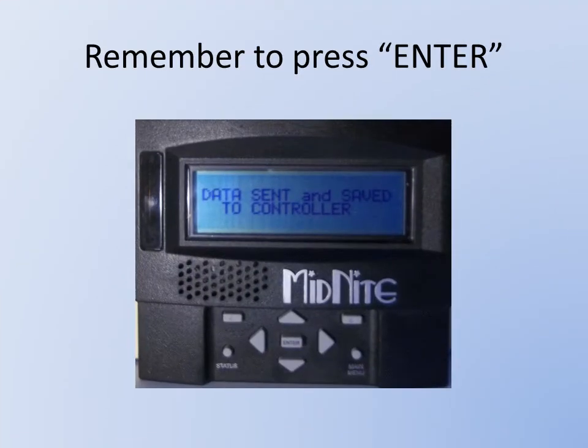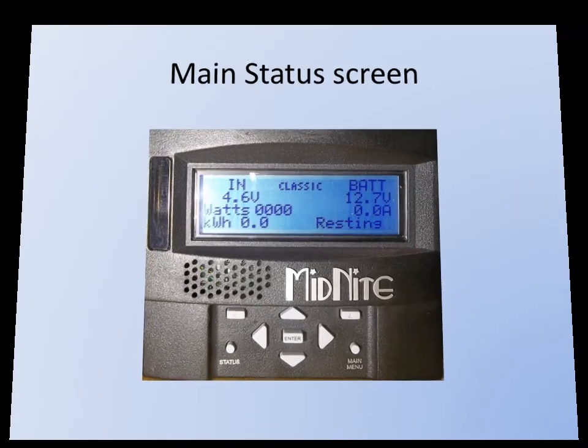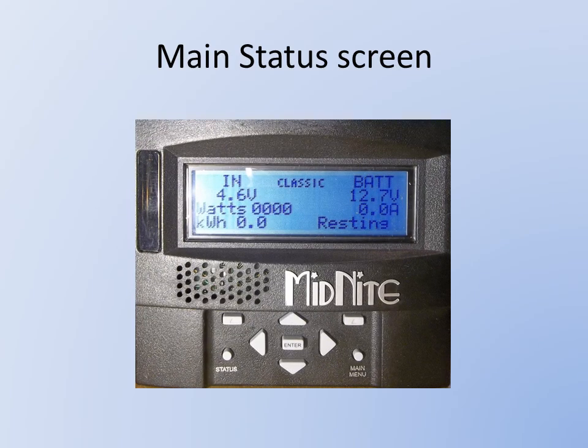As you see, data sent and saved to the controller. Anytime we make a change to the Classic's programming, we need to make sure we press the Enter button and see the data sent and saved to the controller. Now pressing the Status button — the bottom left-hand button — will bring you back to the main screen, and you are ready to turn the turbine on.